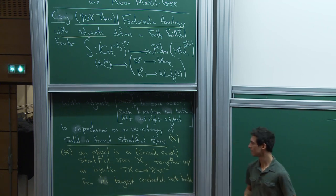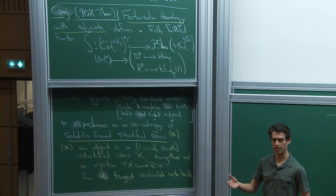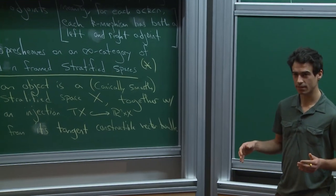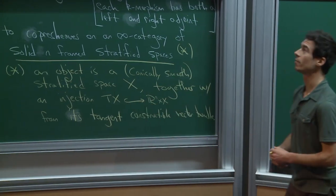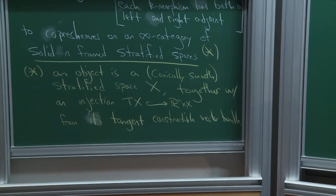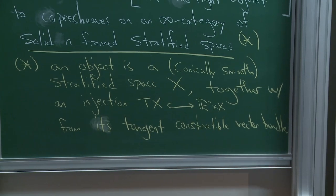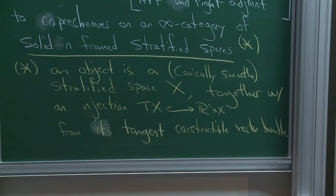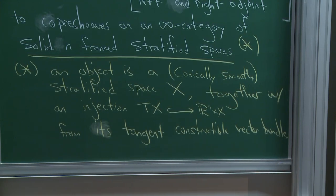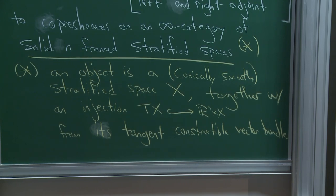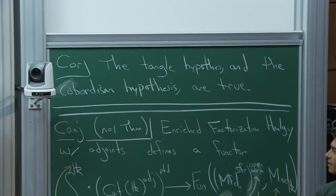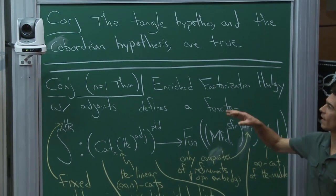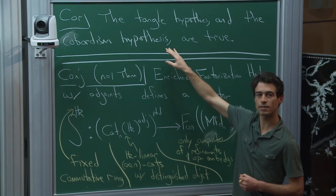One immediate corollary of this theorem is a proof of the Tangle hypothesis as well as the cobordism hypothesis. The logic for how that assertion implies this is posted on the archive. The dimension condition is important: if the stratified space has dimension greater than n, there is no such injection, so the ambient dimension must be no bigger than n.